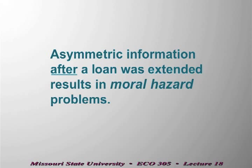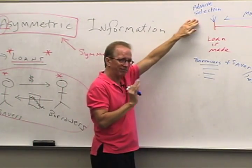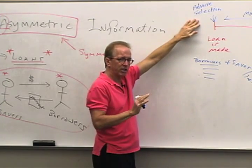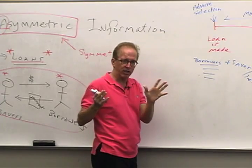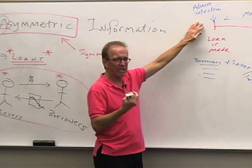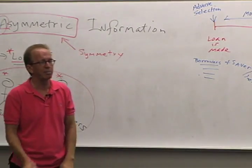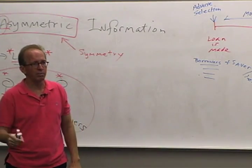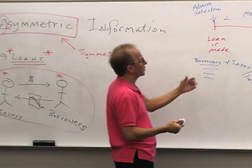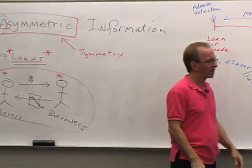We want to understand adverse selection and moral hazard before getting into the financial markets details. Adverse selection is a problem of unequal information at the time the loan is made — when we're negotiating and signing the contract, we know different things. After the loan is made, money is handed over, and we have the moral hazard problem: what does the borrower do with that money, and what information do they have that the lender doesn't, while the lender is still hoping to be paid back?